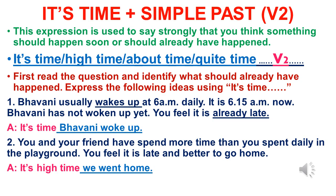We can use 'it's time', 'it's high time', 'it's about time', or 'it's quite time'. All these expressions are correct, but the clause that follows must be in the simple past tense.